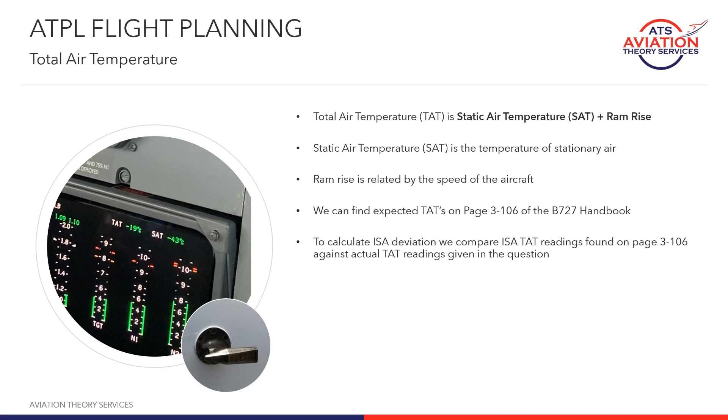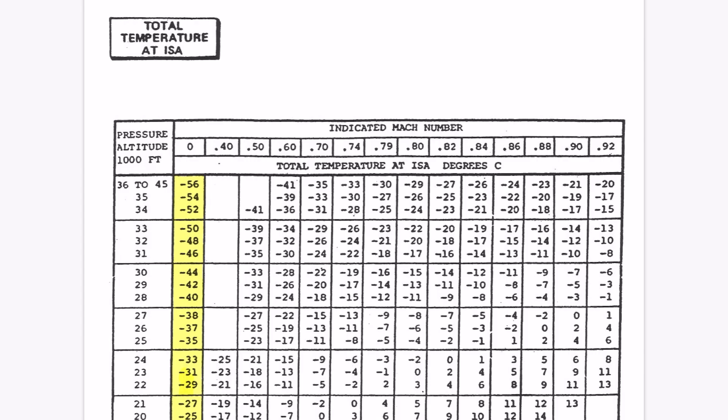If we turn to page 3-106 of the Boeing 727 handbook, we have a table of TAT values at various Mach numbers and flight levels. Let's have a look at an example — we'll go to flight level 330. The zero indicated Mach temperature here of minus 50 degrees is the static air temperature or outside air temperature; that is, it's the actual temperature of the air without any RAM rise.